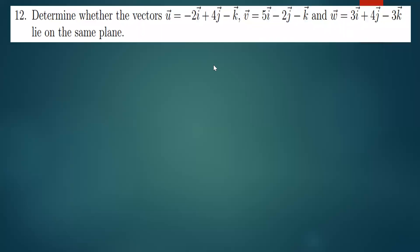We have our last question in the tutorial sheet: determine whether the vectors u, v, and w lie on the same plane. For this one, if you want to know whether these vectors lie on the same plane, there is just one simple formula that you need to understand.